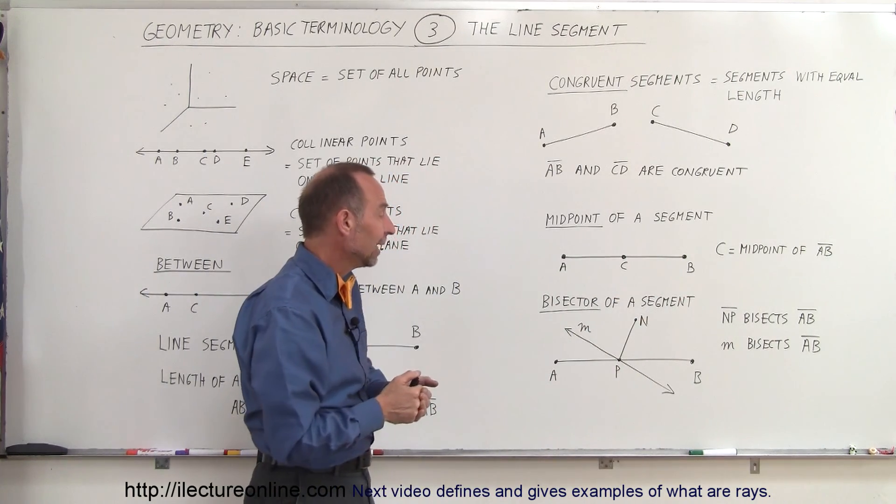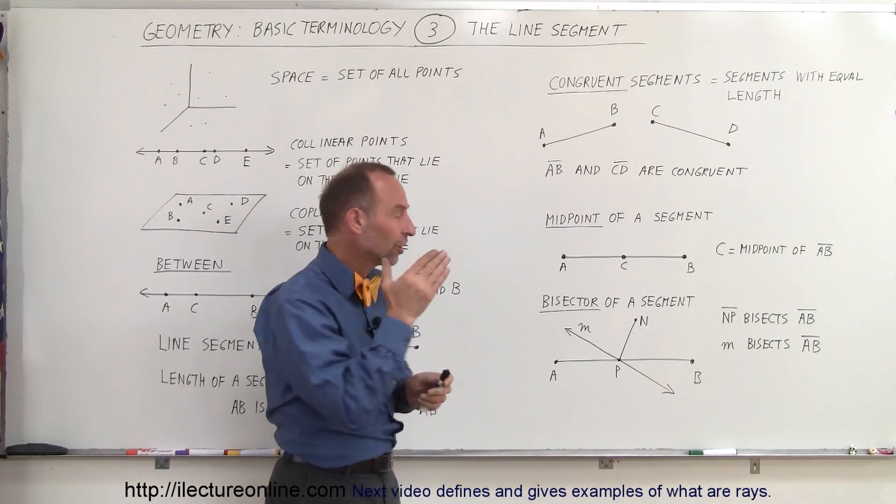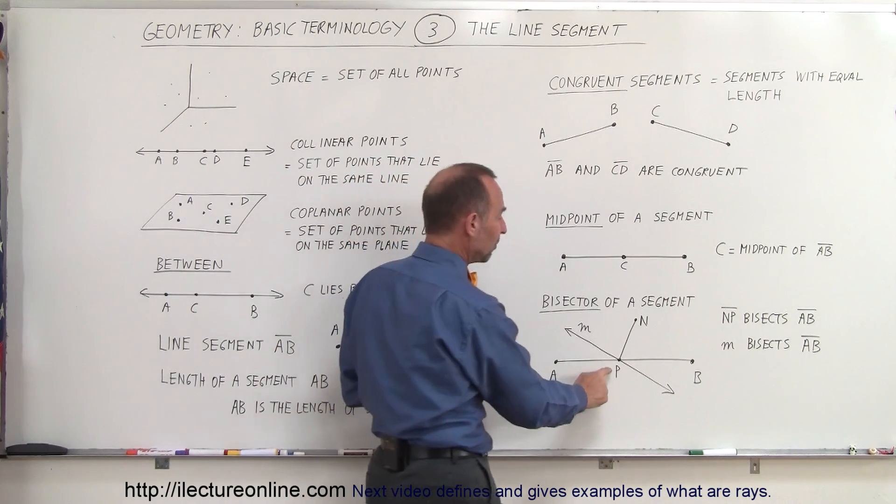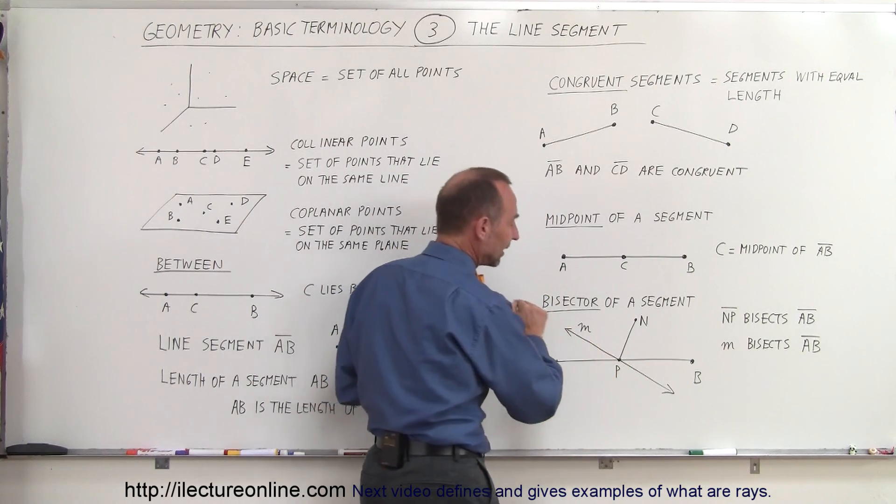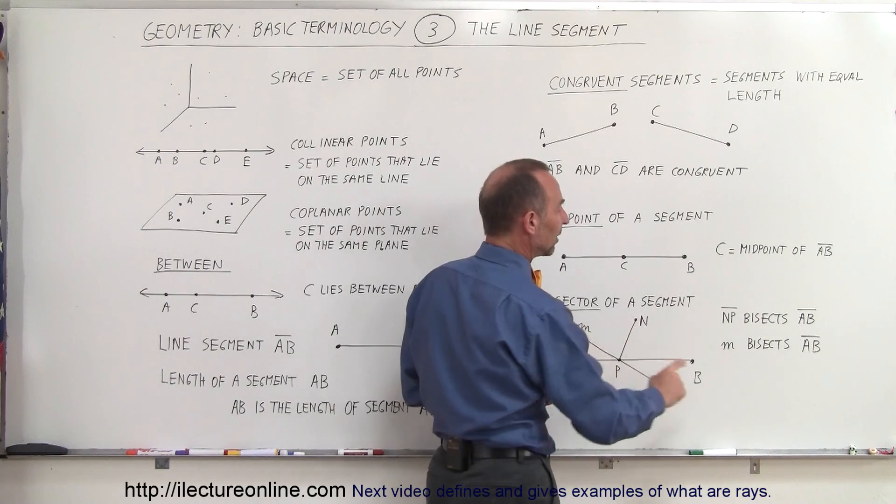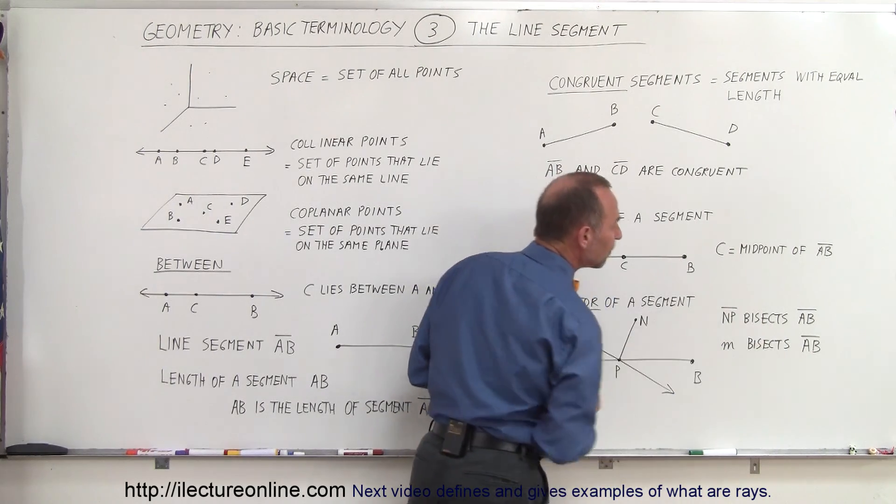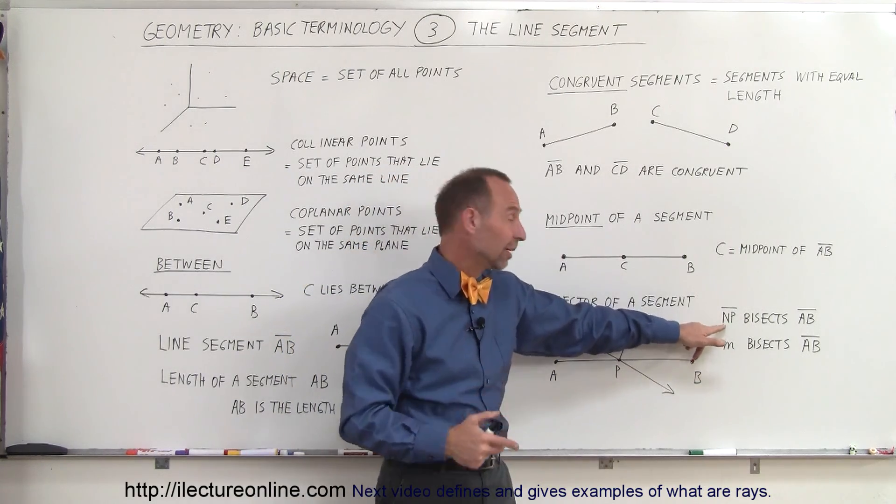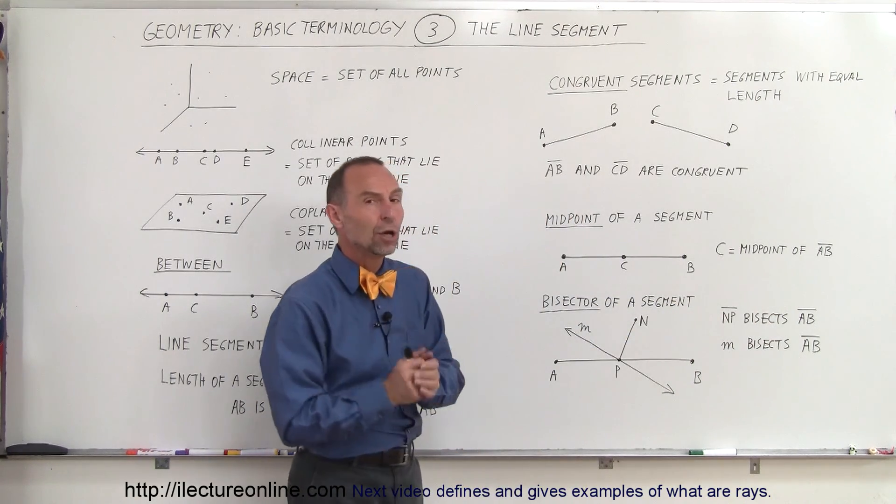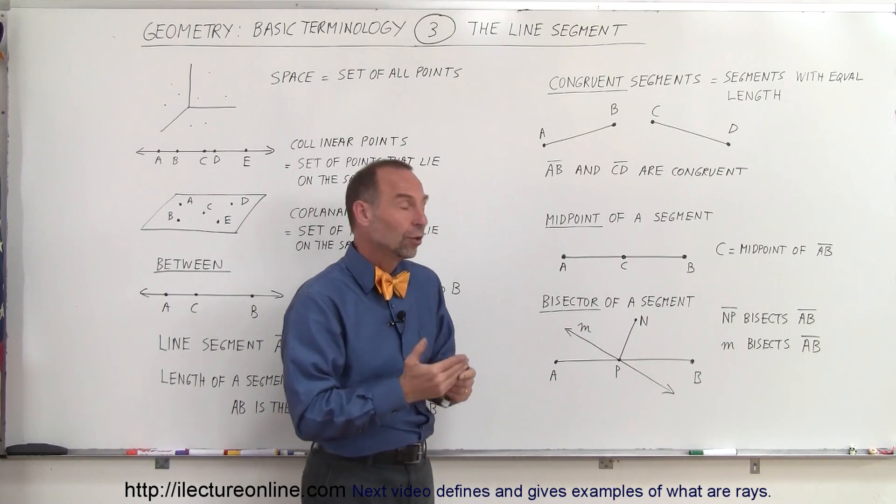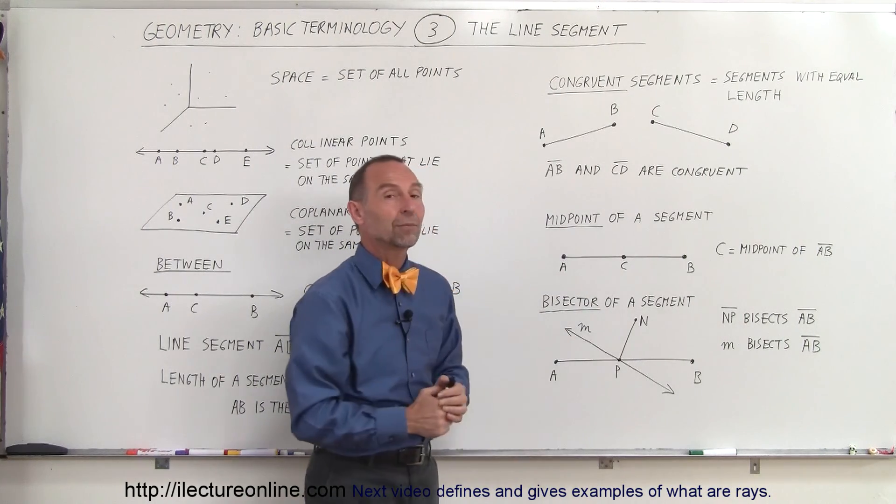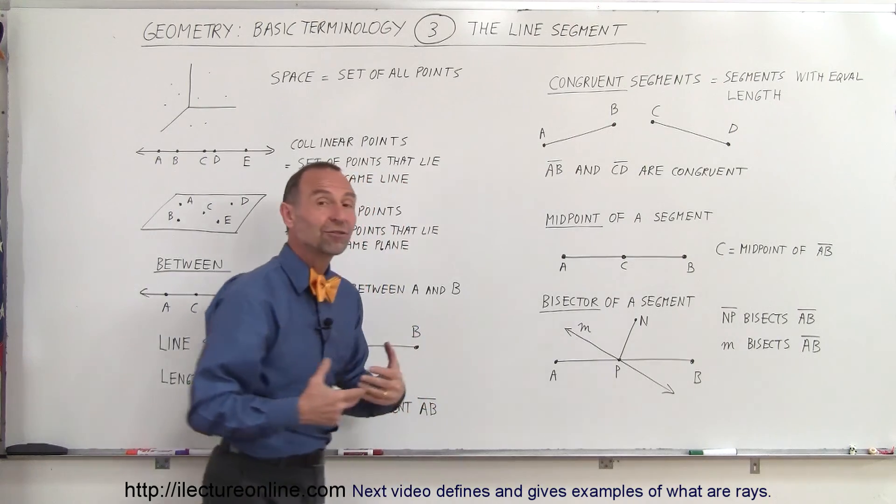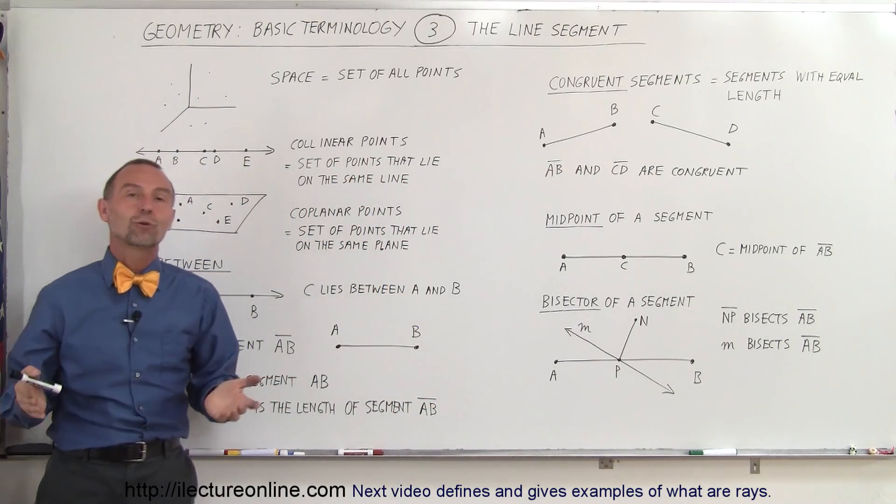Finally, the bisector of a segment is either a line or a segment that cuts through the line segment right at the halfway point, or the midpoint. Here, P is the midpoint of the line segment AB. Notice that the line M cuts right through that point, or intersects right at that point. So we can say that M, the line M, bisects AB because it cuts it right in the middle. And then the line segment from N to P, so NP, which is a line segment, also bisects the line segment AB. Notice something: a bisector of a line or line segment does not have to bisect it perpendicular to that segment. It can come in at any angle as long as it goes to the point right in the middle, which is also called the midpoint.